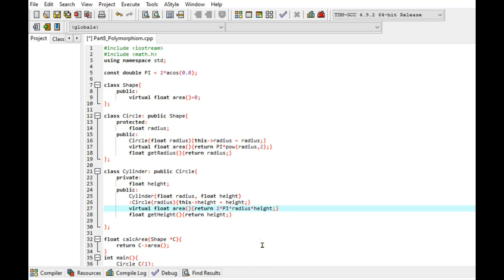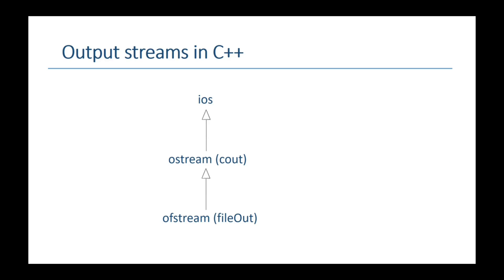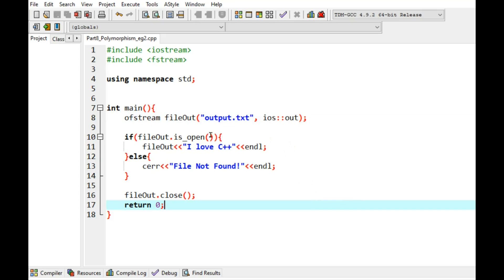I have another very interesting and useful example of polymorphism using output streams. With one piece of code you can either write to a file or to the console output screen. The output streams are structured like this in C++, with ostream for cout and ofstream for file output. So let's see the example. Here I have a simple program that opens up a file and writes I love C++. But I want to make use of polymorphism to write a common function that prints to the file and to the console output screen.